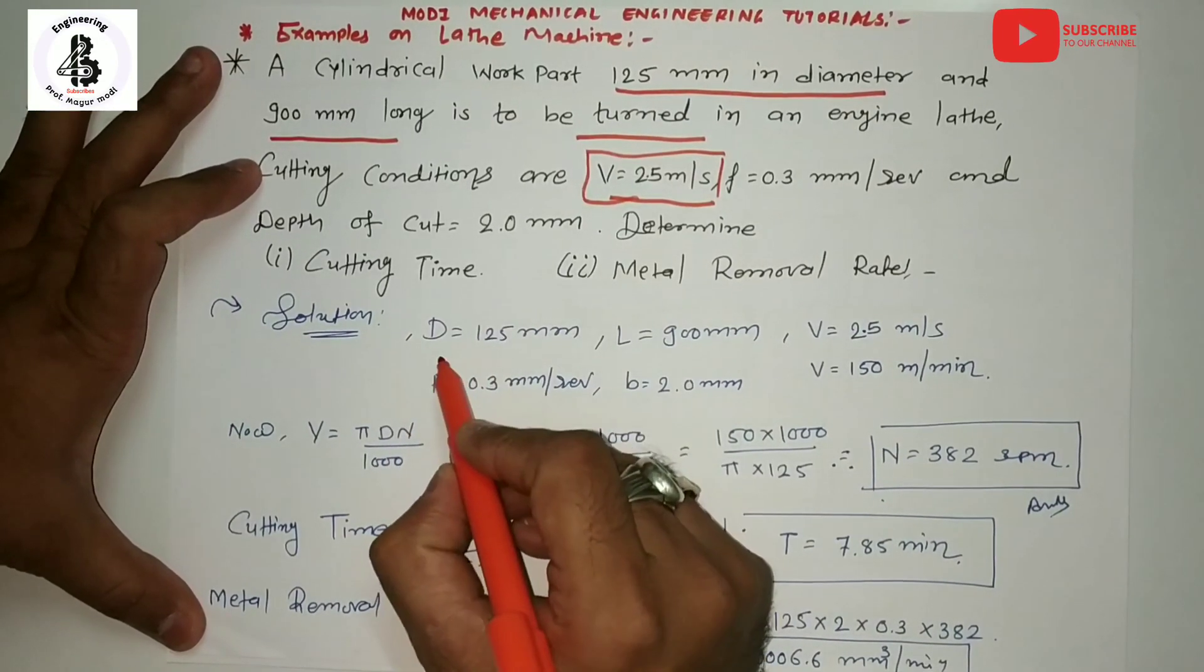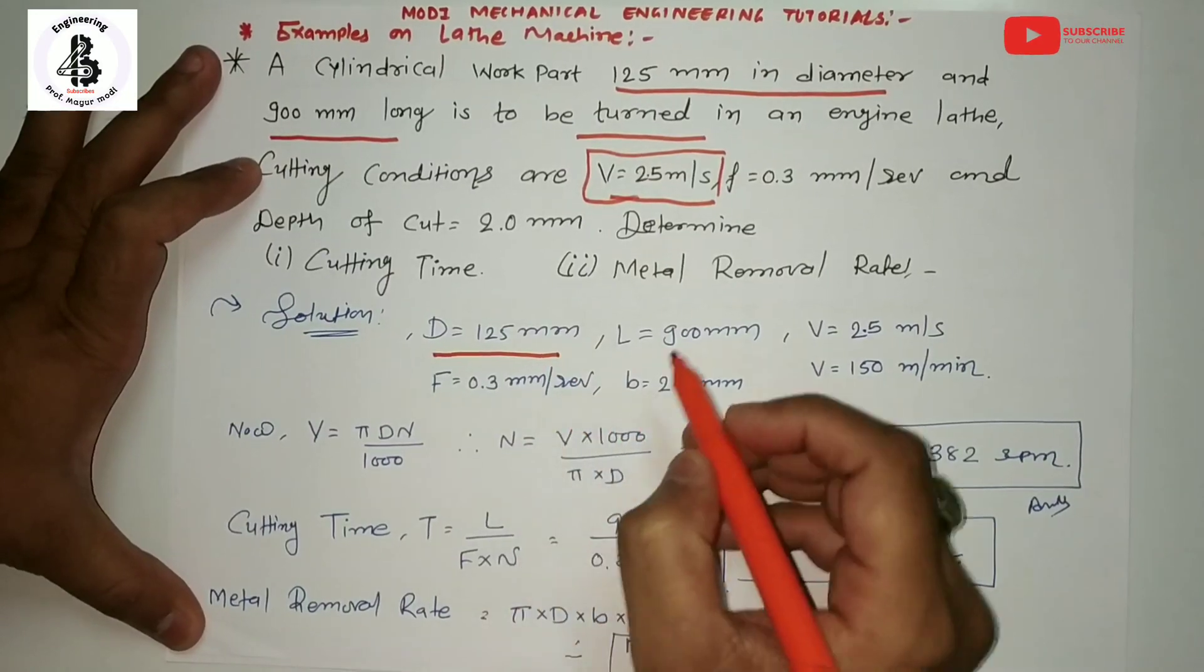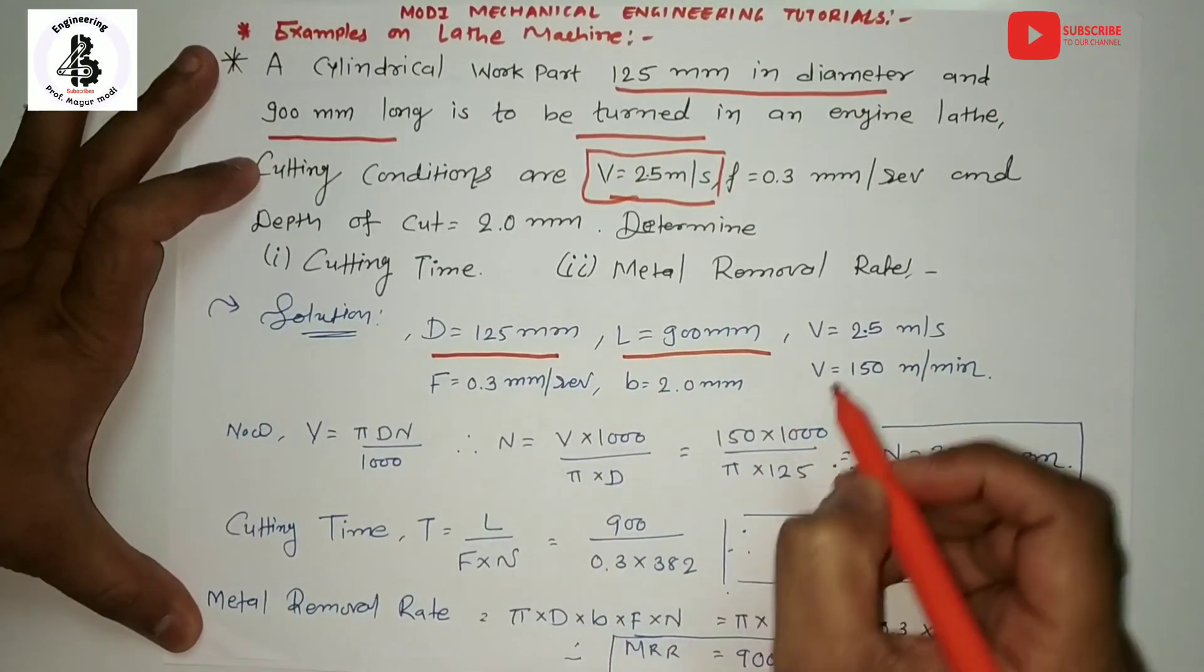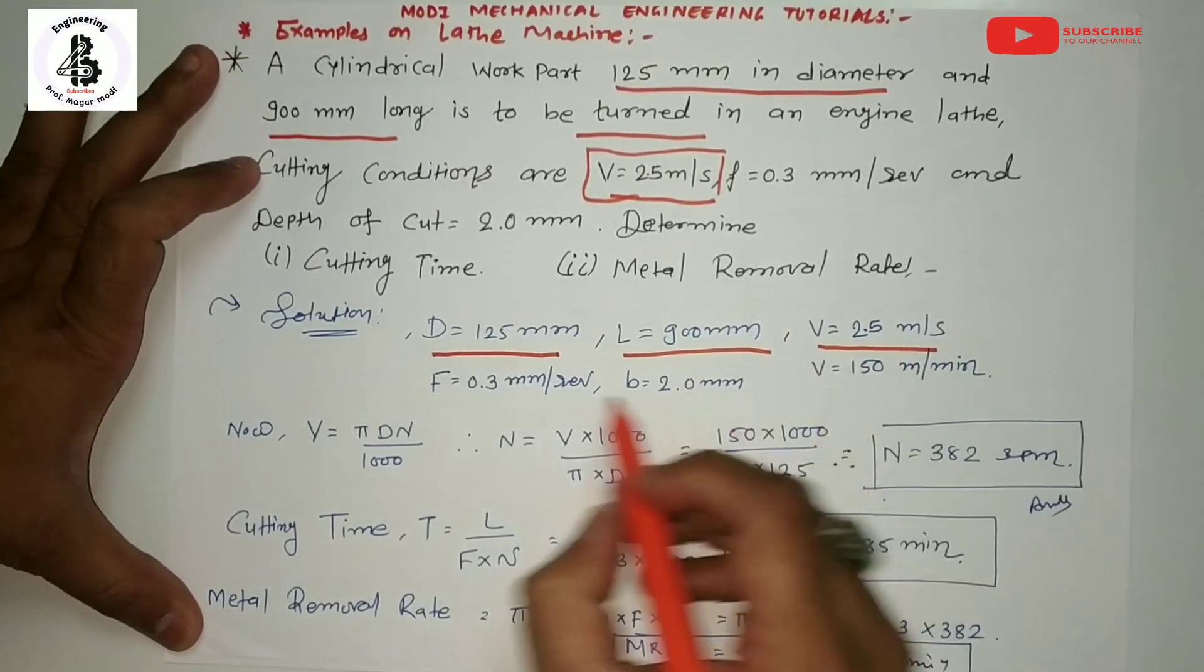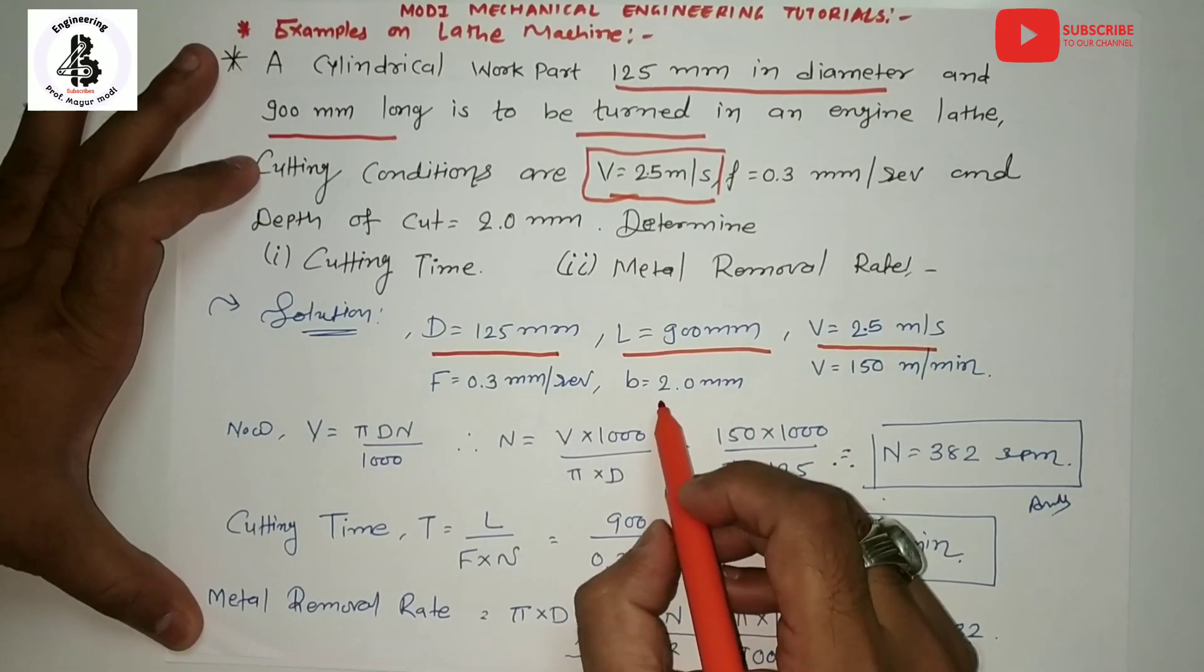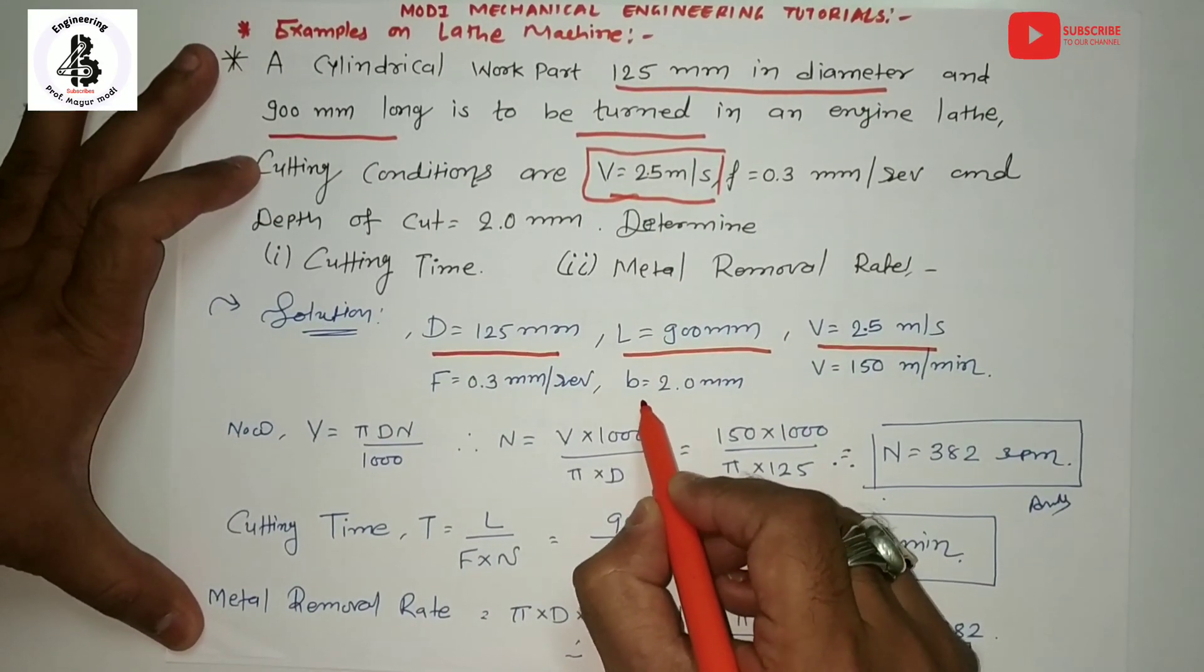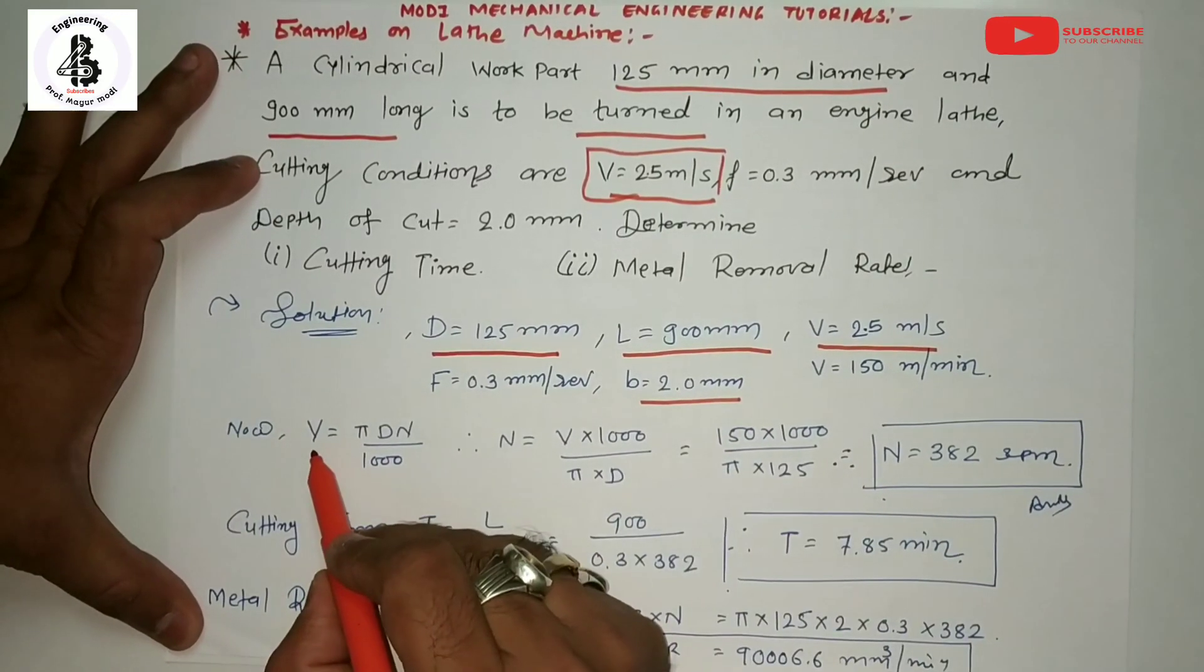Capital D is the diameter of the workpiece, L is the length of the workpiece, V is the speed in meters per second, feed = 0.3 mm per revolution, and B or depth of cut = 2 mm. Now we all know speed V = πDN/1000.